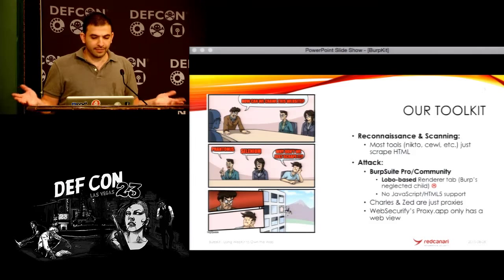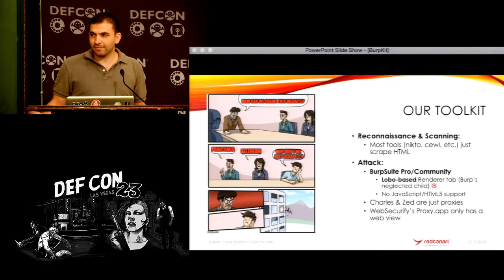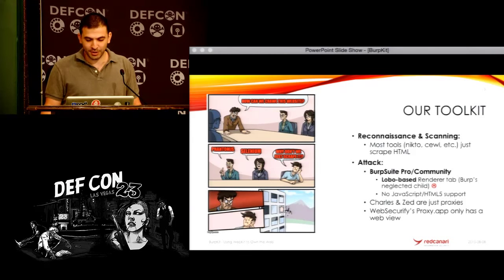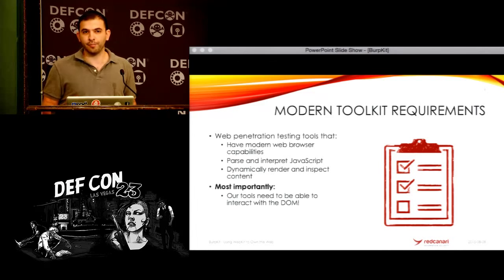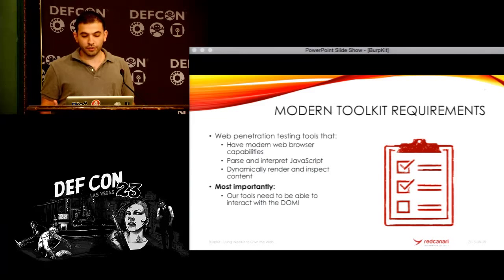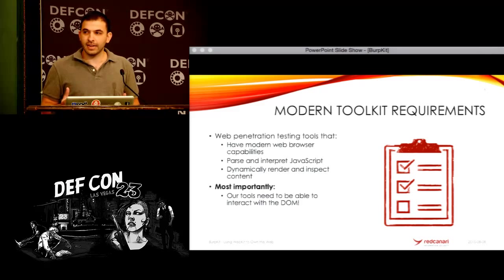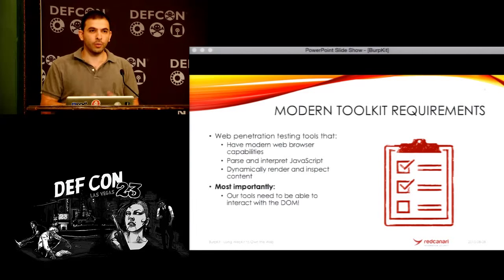So as I said, our toolkit is mostly console-based. We have Burp Suite which is the de facto web pen testing tool, and in Burp Suite we only have that really lame renderer tab which uses Lobo — the neglected child that nobody ever uses. When I set out to build the tool, I said we really need to start taking advantage of modern web browsing capabilities in our tools. These tools need to be able to interpret and execute JavaScript, dynamically render and inspect content, because the web browser itself is an excellent parser. And most importantly, we needed the tool to interact with the DOM and vice versa.